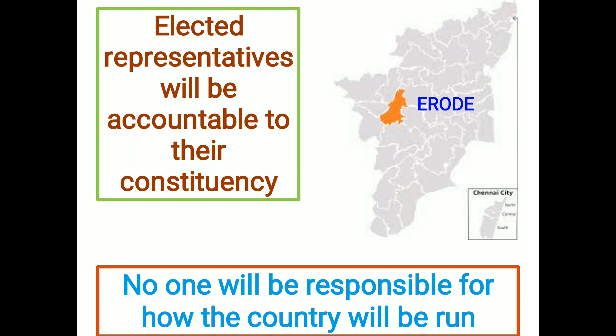If there is no political party, each and every candidate in the election will be independent and they cannot make promises to the people, keep up those promises, or make any major policy changes. When the government is formed, its utility will remain uncertain. Whoever is elected is responsible only for their particular constituency, and no one will be responsible for how the country will be run.